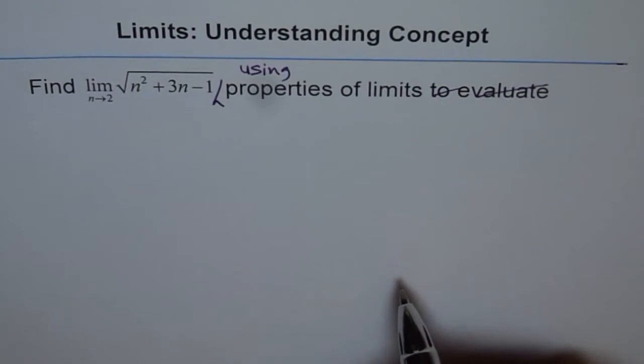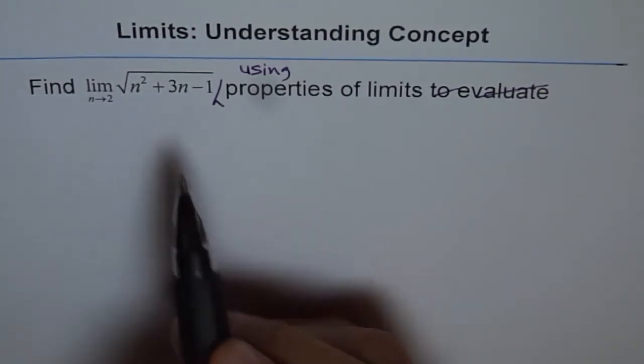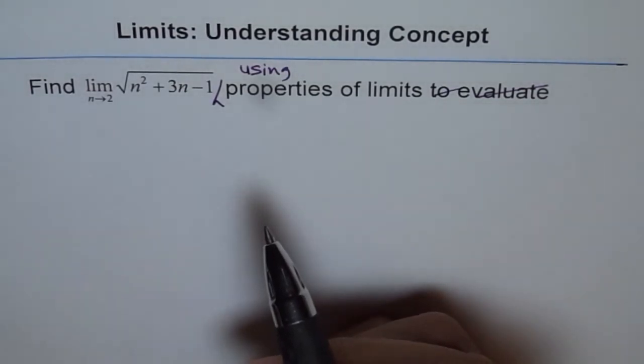Now, just as in algebra, we have similar properties of limits. You can add limits, you can subtract limits, you can multiply them, you can find square root, and you can square them.